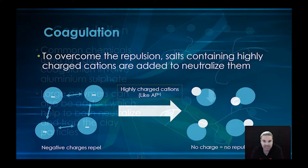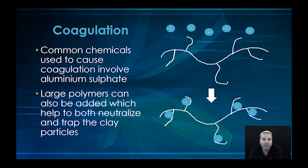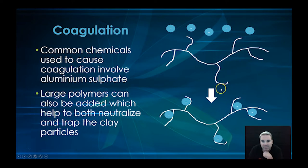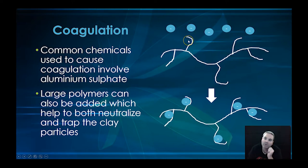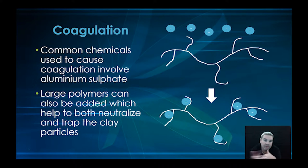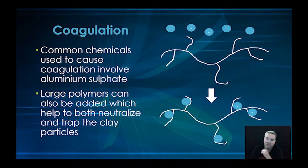Something that's started to be tested these days is the use of large polymers. These large polymers have special areas with positive charges on them, and because they're positive they attract the negative clay particles. Not only do they attract and neutralize the charge, but they actually trap the clay particle as well. So when you remove your polymer, you remove the clay with it — you're doing your filtration and neutralization all in one step, which is quite a good benefit.